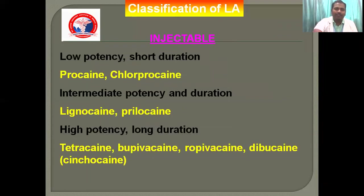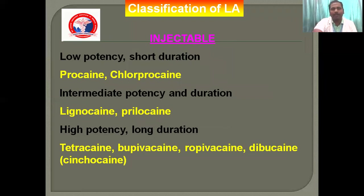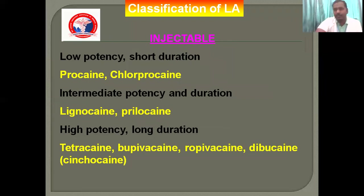Looking at the classification, local anaesthetics can be classified in injectable form. Low potency and short duration includes procaine and chloroprocaine. Intermediate potency and longer duration includes lignocaine and prilocaine. High potency and long duration includes tetracaine, bupivacaine, ropivacaine, and mepivacaine.